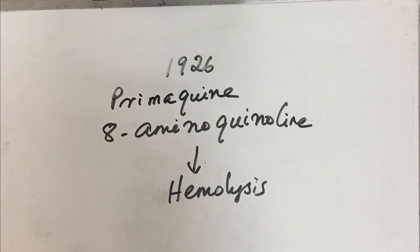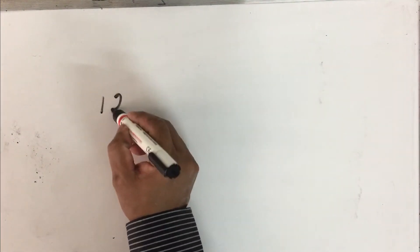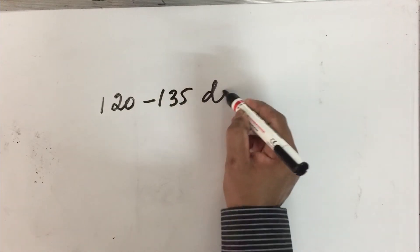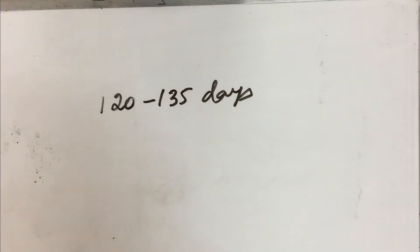RBCs have a lifespan of roughly about 120 to 135 days. As the RBC is growing, when it is devoid of mitochondria, it is not able to synthesize enough ATP molecules, not able to carry out protein synthesis, and has to depend exclusively on glycolysis for ATP production. It is purely an anaerobic system.